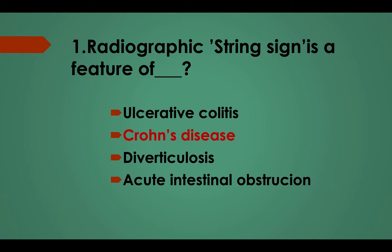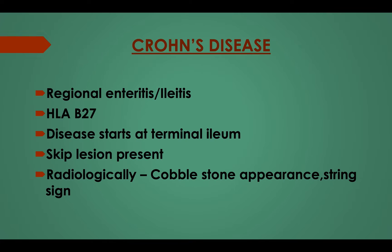Answer: Option B, Crohn's disease. Crohn's disease, also known as regional enteritis or ileitis, is associated with HLA-B27. Disease starts at the terminal ileum. Skip lesions are present. Radiologically, cobblestone appearance and string sign are present.